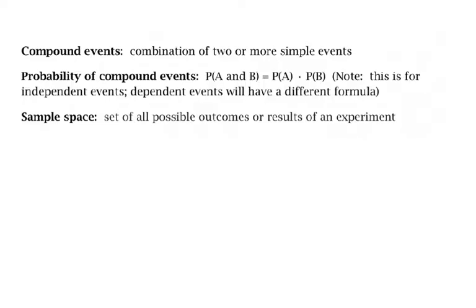The next topic is compound events, which we'll talk about a lot in this unit. Compound events are a combination of two or more simple events — like if you toss a coin and then toss a coin again, or toss a coin and roll a die, or roll a die and spin a spinner. For example, what's the probability that you get heads and a six? That would be a compound event.